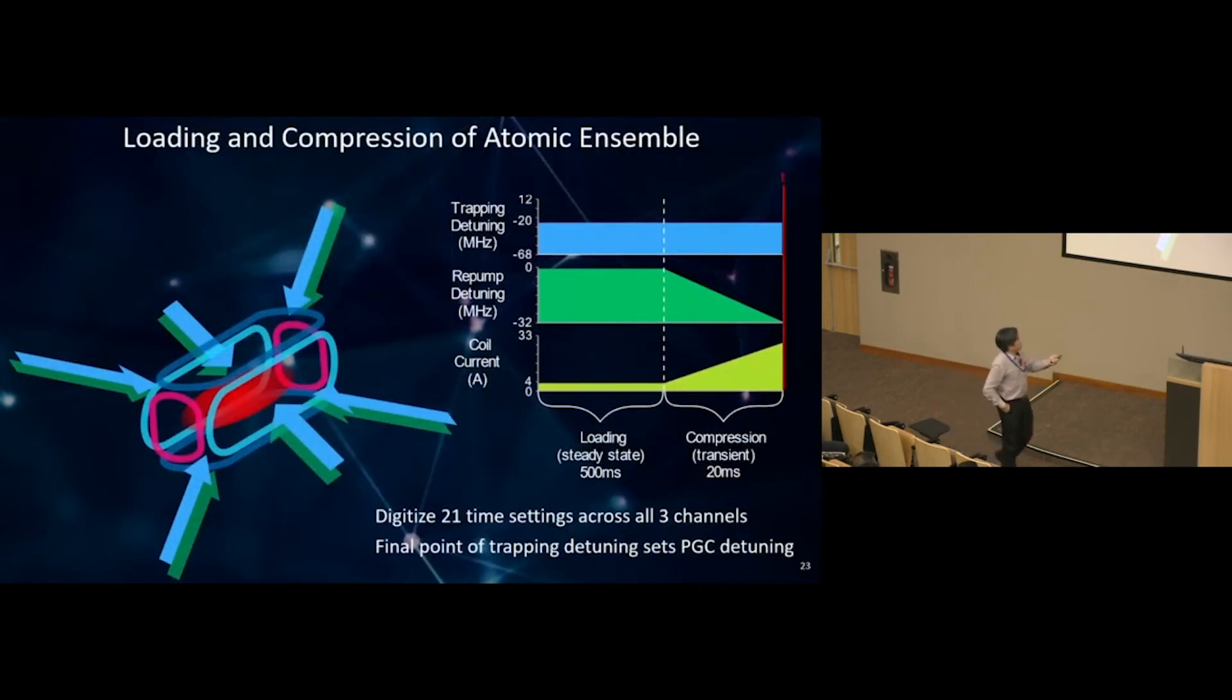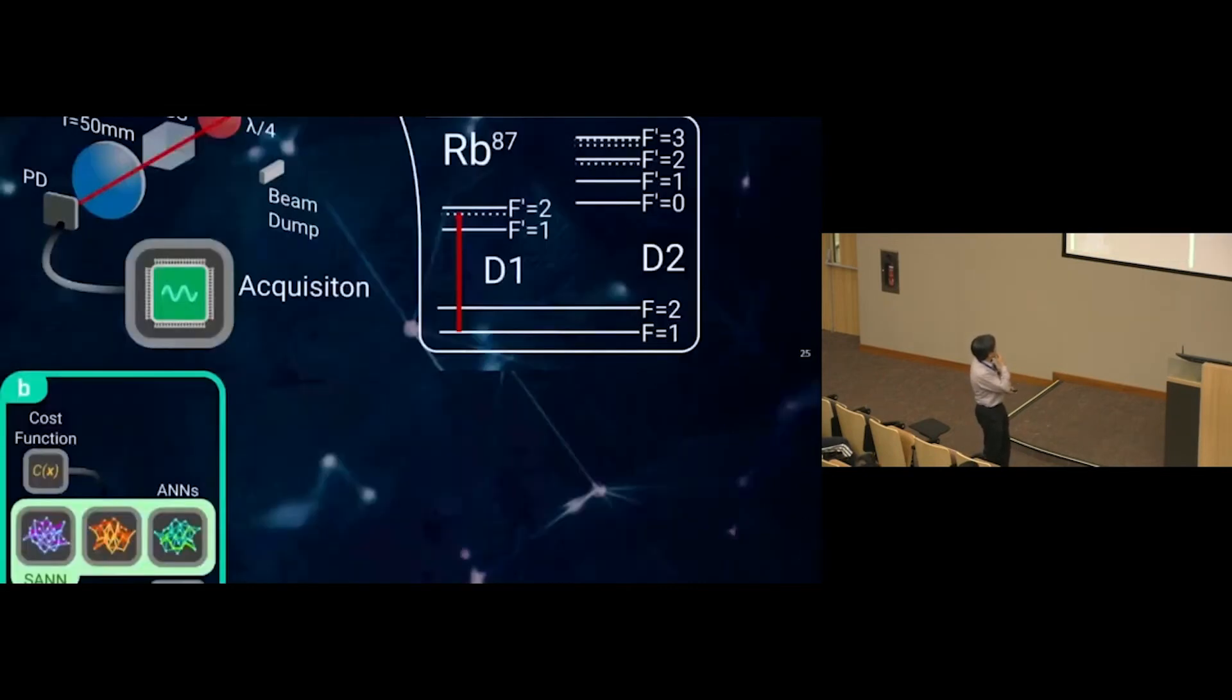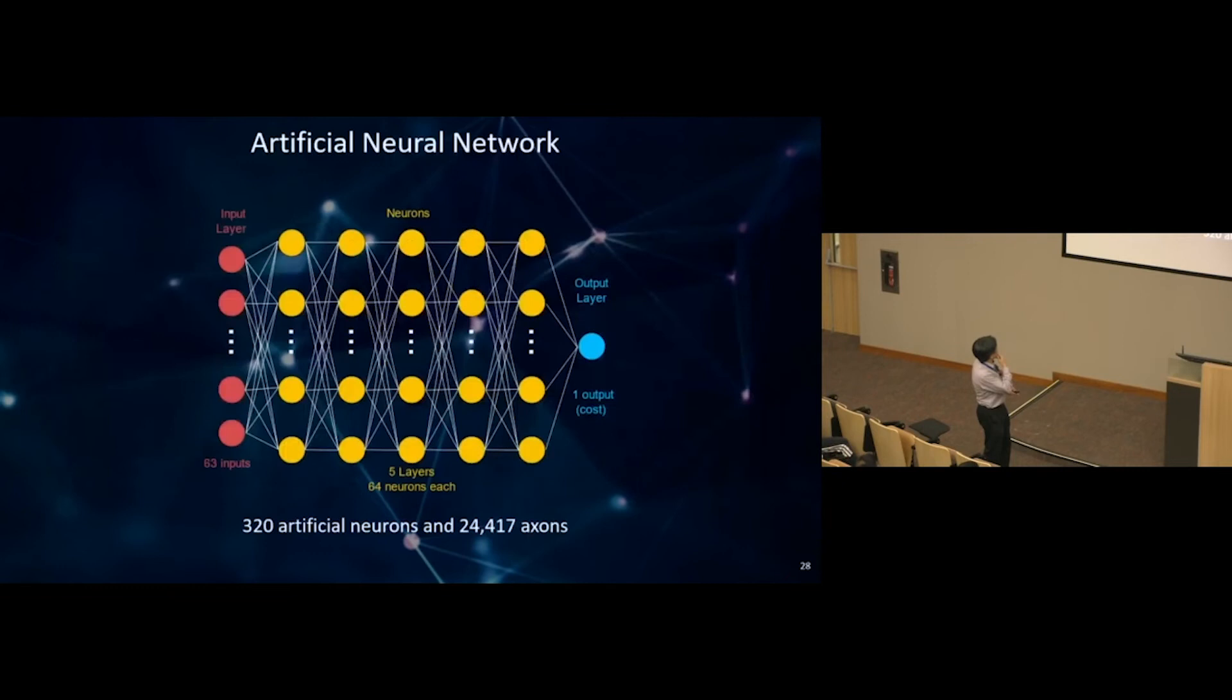I should say that although this is an adiabatic change, linearly decreasing or increasing, everything is digital in my lab. We cut this into 21 slices. So we have this step increase and step decrease. Just looking at the compression phase alone, we have 63 parameters.